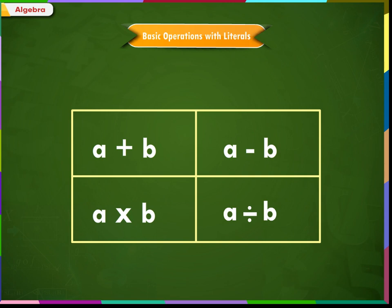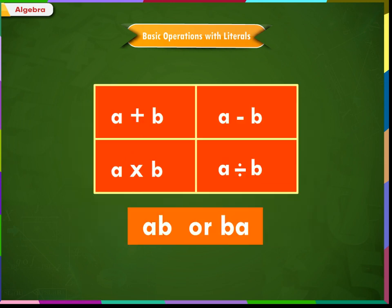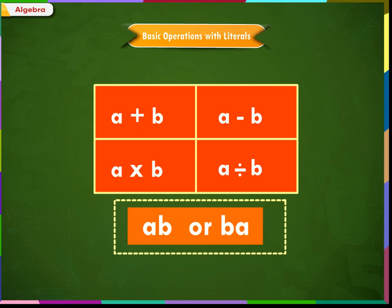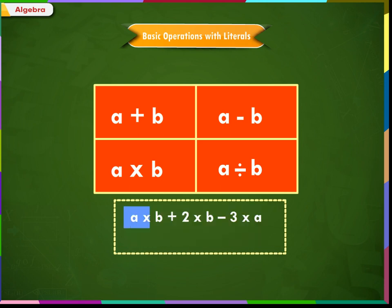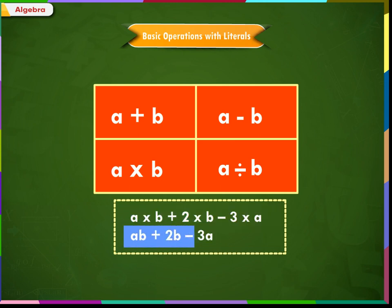There are four basic operations in arithmetic: addition, subtraction, multiplication, and division. Similarly, we have all four operations in algebra. In algebra, all other operations are treated the same way as in arithmetic, but multiplication is special. If there is no sign between two variables, this means they are multiplied. So A into B can also be written as AB or BA. This helps make a complicated algebraic statement look easier. For example, A into B plus 2 into B minus 3 into A can be written as AB plus 2B minus 3A.